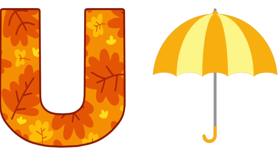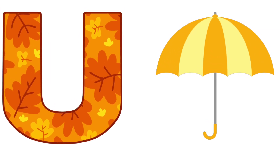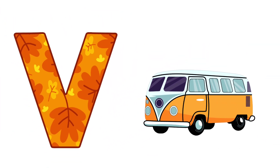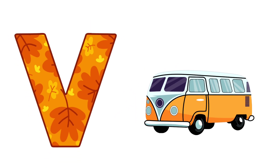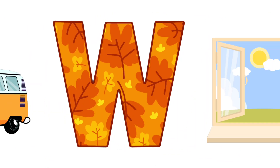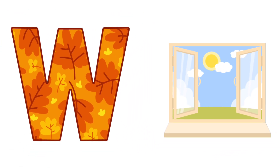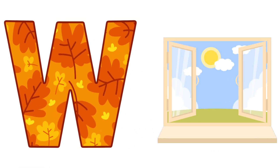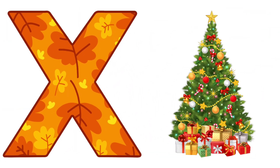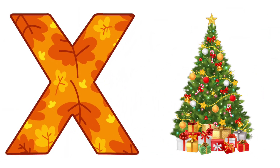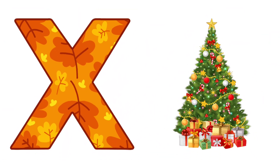U is for Umbrella. V is for Van. W is for Window. X is for Xmas.